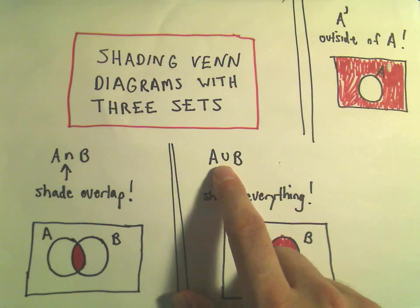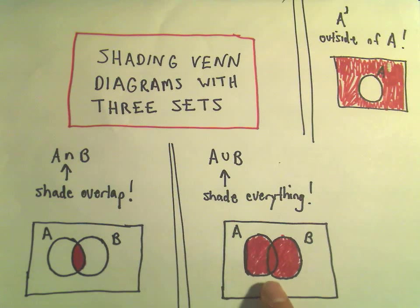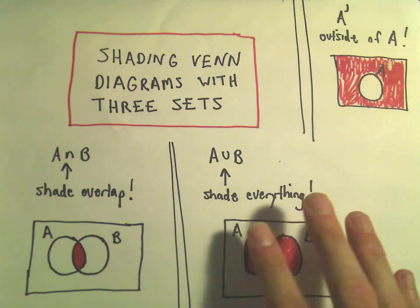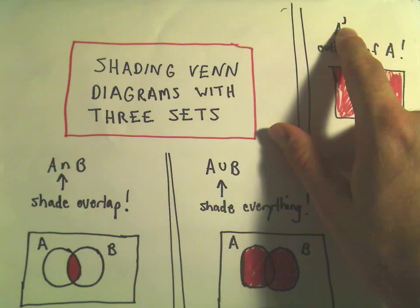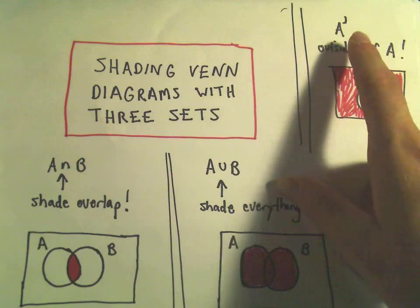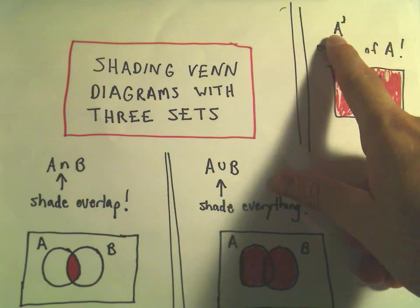If it's the union or the OR symbol, we just shade everything. So if we shade A or B, we're shading everything in A or B. And remember this little apostrophe is the complement, which basically says you're shading everything that's not in A.